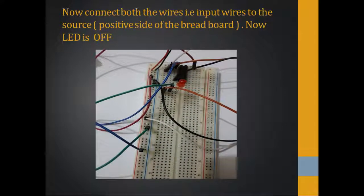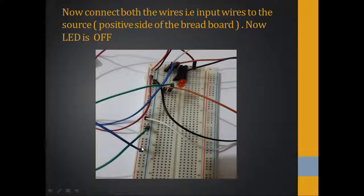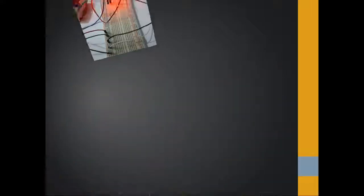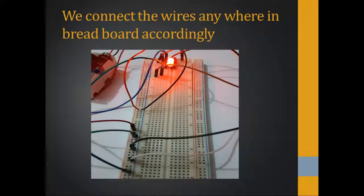Now the LED gets off. Both the white wire and the blue wire are connected to the positive terminal, meaning both inputs are one. So the output is zero, which proves the fourth condition of the truth table — when both inputs are one, the output is zero.